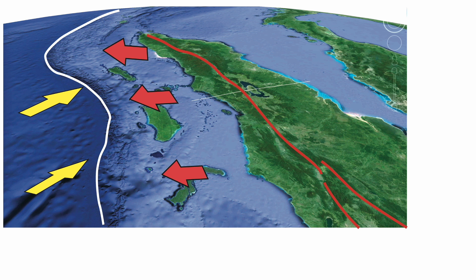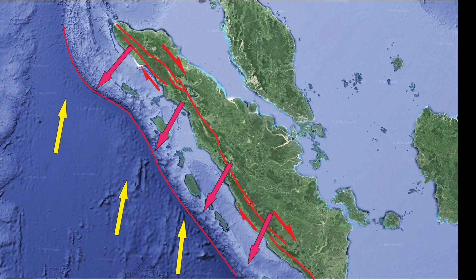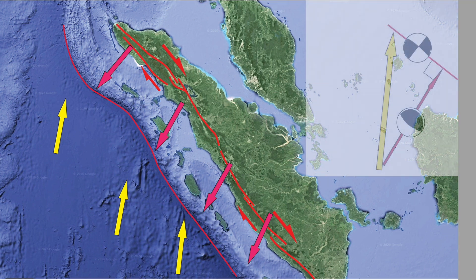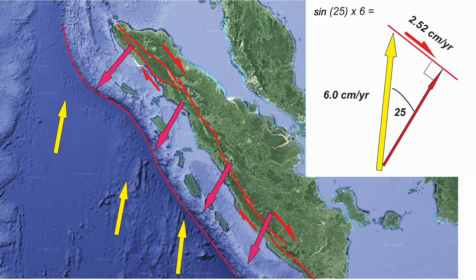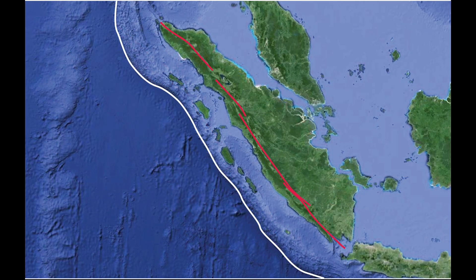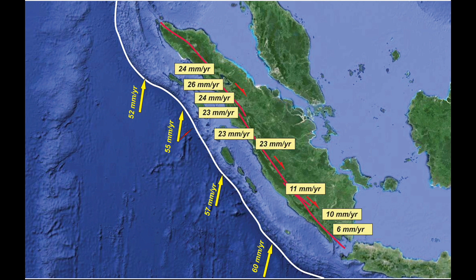We can add the Great Sumatran Fault to this. So here's the game, and we solve it by constructing a vector triangle relative to Eurasia. The oblique plate motion is in yellow, and it partitions into thrusting and strike slip. If we take a plate displacement vector of 6 cm a year and an obliquity of 25 degrees, then the trigonometry gives us a slip rate on the Great Sumatran Fault of a shade over 2.5 cm a year. You can use geodetic surveying to get estimates of active slip rates along the Great Sumatran Fault, which in the north broadly match our quick velocity triangle estimates, but in the south there's a slip deficit. Nevertheless, overall our approach is working.